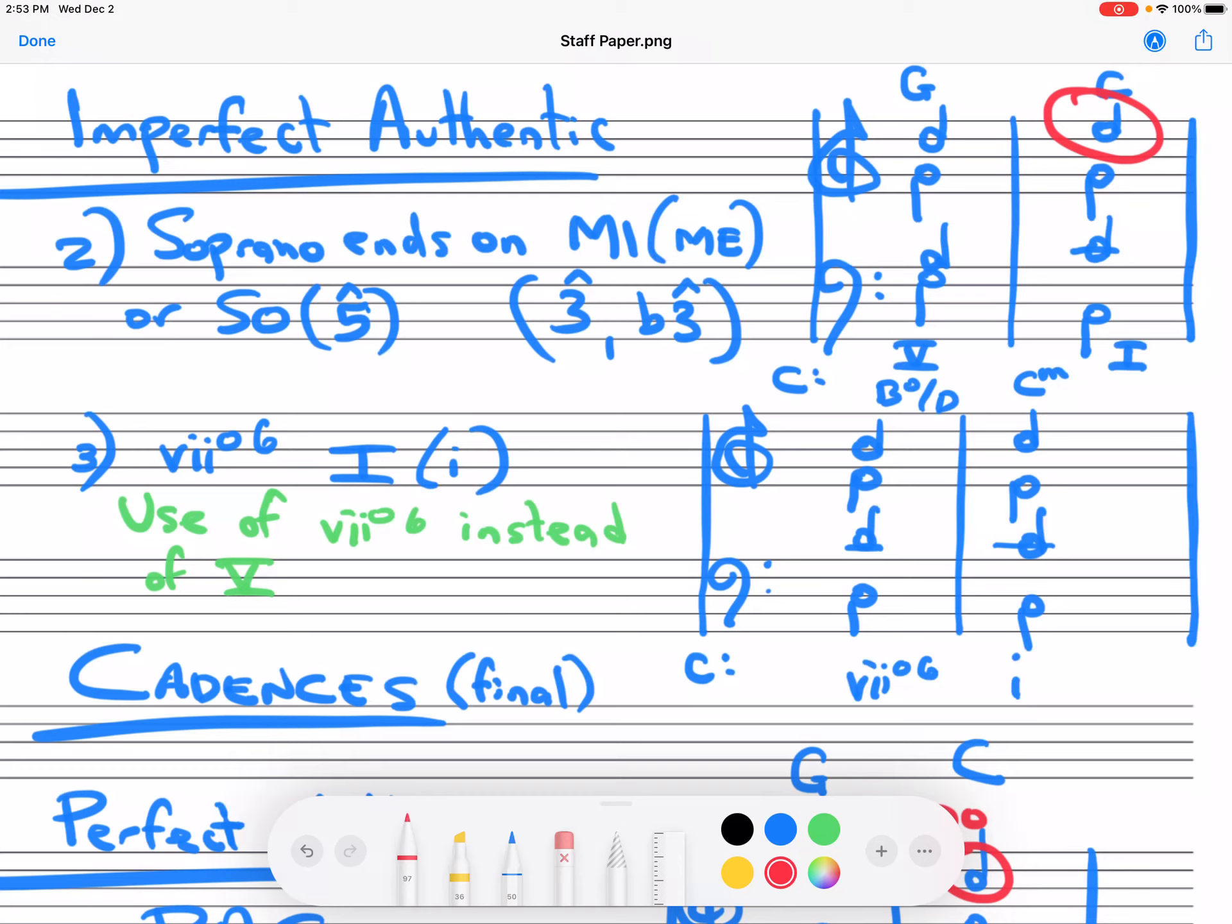We could also have it go to So, or stay on So. Here's a perfect example. So it's one, five, one. And in this case, maybe I should play it in root position so you can hear it. So even though I play it in the bass, the melody ends in the middle of So Mary had a little lamb on So. So this would be an imperfect authentic cadence in which the soprano is ending on something other than Do.